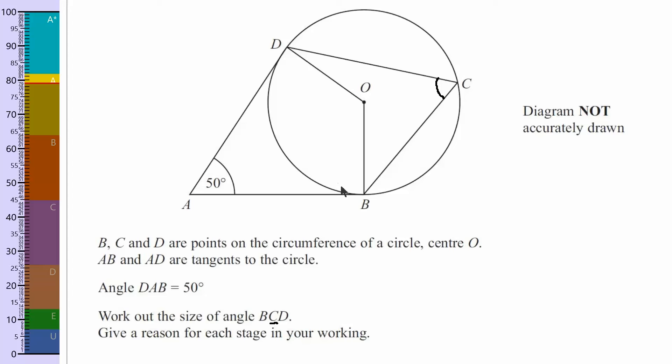Now, first thing I notice is that we've got two radii here. Radius is defined as a line between the centre of a circle and the circumference, which we have two of here. So that means this here is going to be 90 degrees. In fact, let's write this down now.